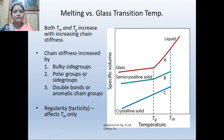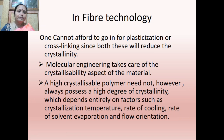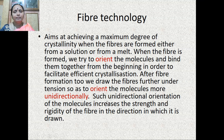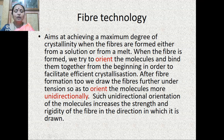Chain stiffness increased by bulky side groups, polar groups, and double bonds should be avoided in fiber technology. One cannot afford to use plasticization or cross-linking since both reduce crystallinity. Molecular engineering takes care of crystalline ability. A highly crystallizable polymer need not always have a high degree of crystallinity, which depends on factors such as crystallization temperature, rate of cooling, rate of solvent evaporation, and flow orientation. Fiber technology aims at achieving maximum crystallinity when fibers are formed from solution or melt, orienting molecules and binding them together from the beginning. After fiber formation, fibers are drawn under tension to orient molecules more unidirectionally.